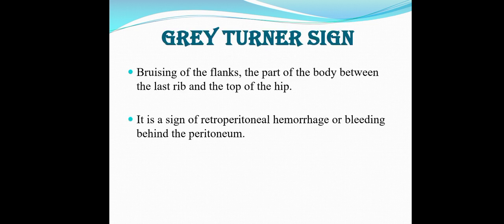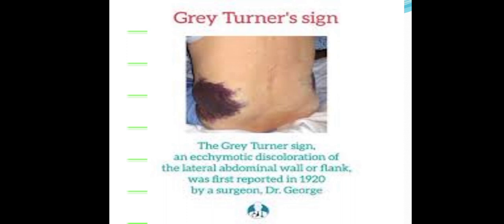So to summarize, the Grey Turner sign is the bruising of the flanks — the side of the human body. It presents as a bluish discoloration on the side of the human body, and we call it the Grey Turner sign.